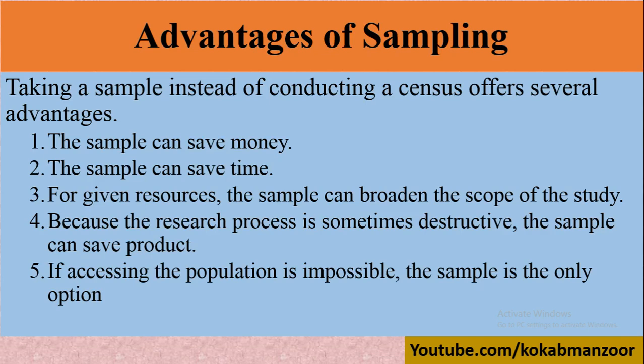Because the research process is sometimes destructive, the sample can save the product. In marketing or production, we take one or two samples and test them. Sometimes there is a defect, so it is better that only a small amount is damaged. For example, like taking a few grains of rice to check — if something is wrong, you can fix it by cooking it again with salt. Only that small portion is damaged. Similarly in production, a few units are taken out to check, and then you know whether to continue production or not.